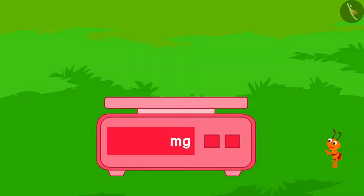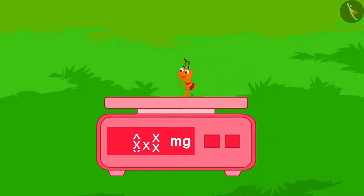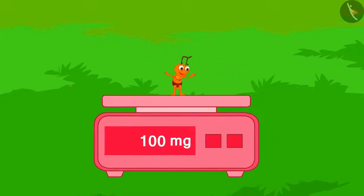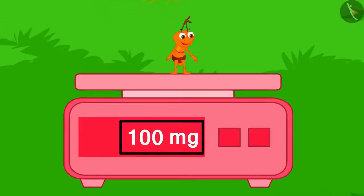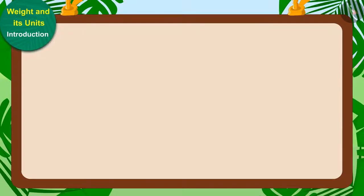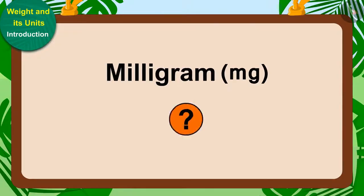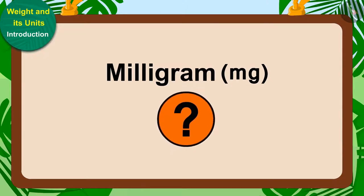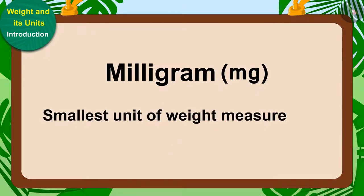When the ant stood on that weighing scale, its weight showed as 100 milligrams. Kids, do you know what milligram is? Milligram is the smallest unit of weight measurement.